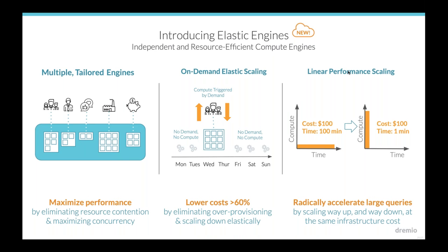We're introducing a very powerful new capability as part of the Dremio AWS Edition: elastic engines. These are independent compute engines that are extremely resource-efficient. We go from a world of a single execution cluster to a world where you can have multiple tailored engines — as many as you want. Whatever workloads you've got, you can map them one-to-one to an engine. Each engine can have as many executor nodes inside as you need — there could be hundreds depending on the workload.